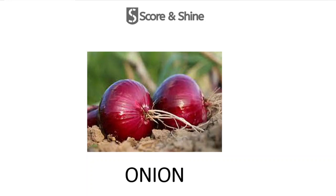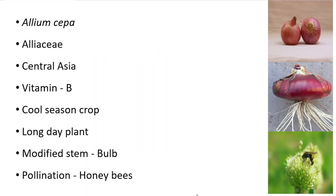Welcome back to my channel Score and Shine. In this video I'll be telling you all about onion. The scientific name of onion is Allium cepa, it belongs to the family Alliaceae, and its origin is from Central Asia. It is a very good source of vitamin B and it is a cold season crop.